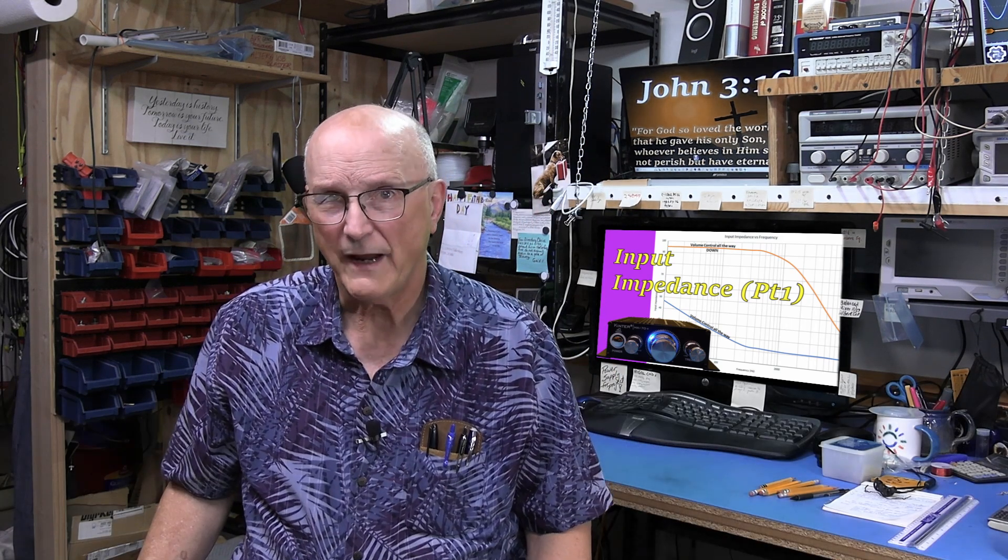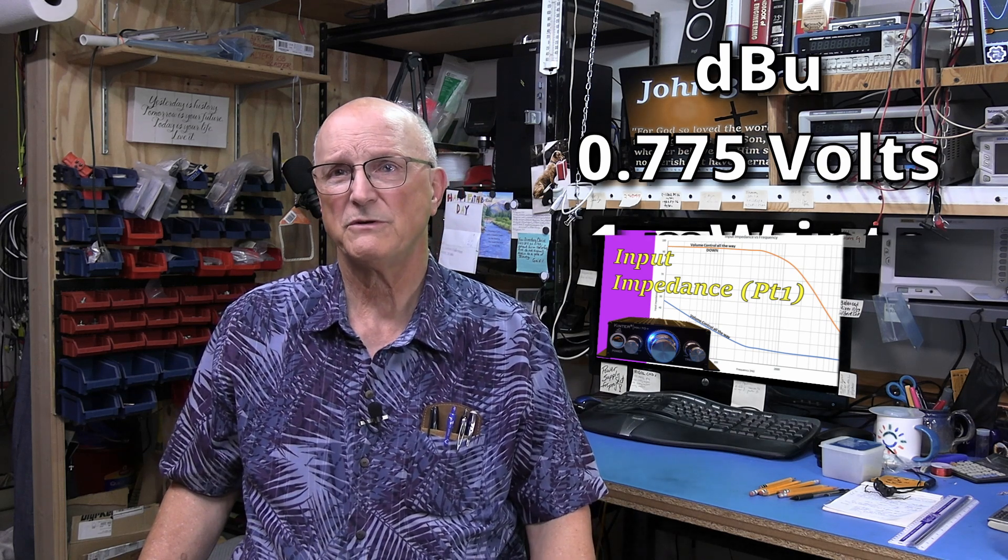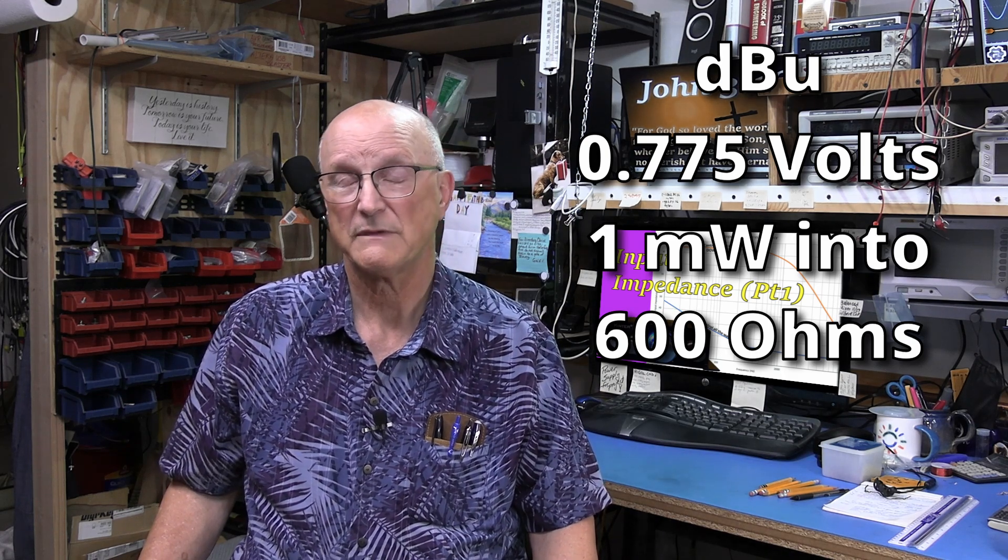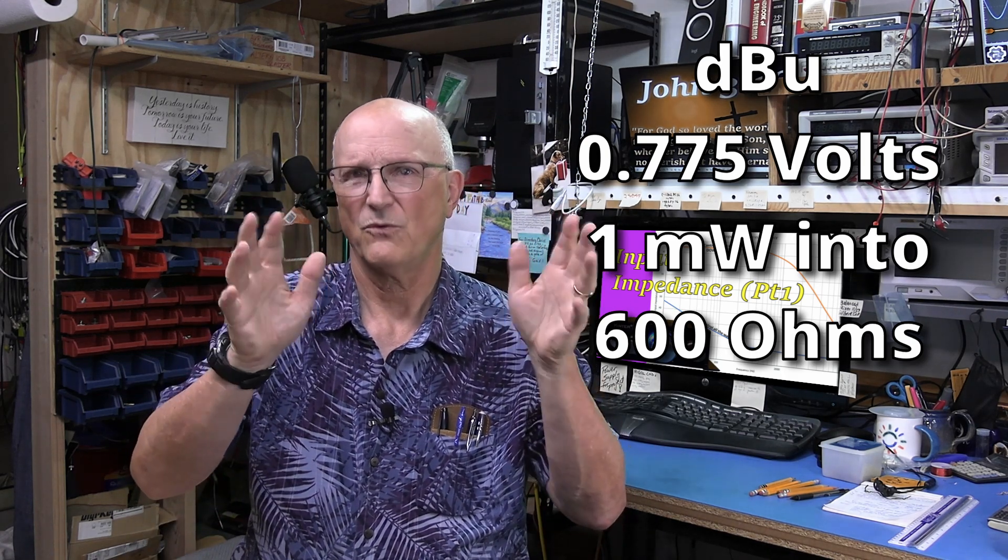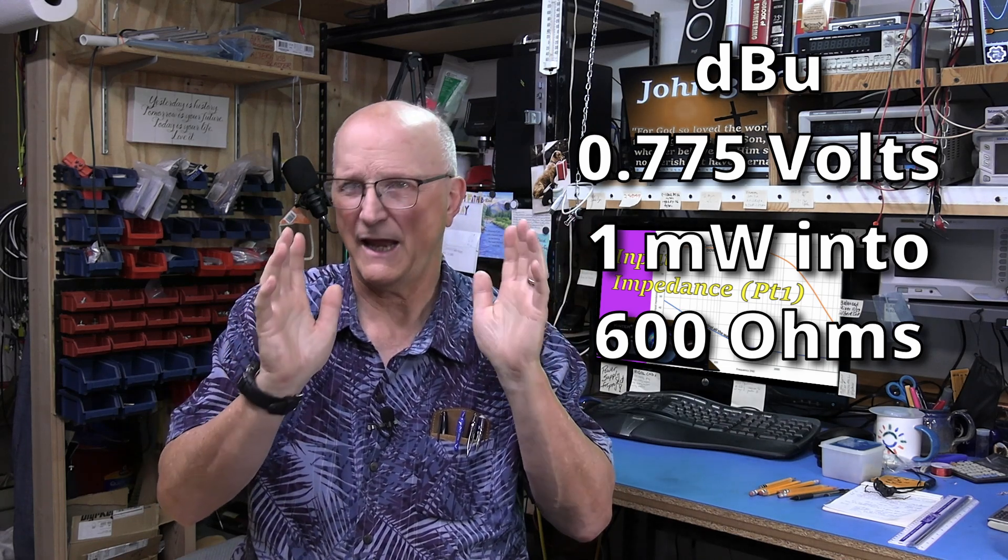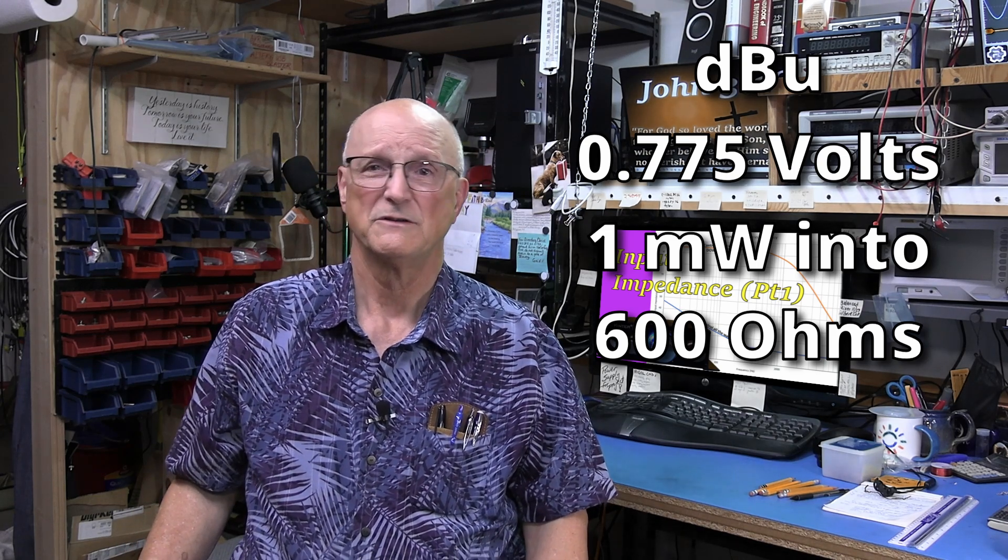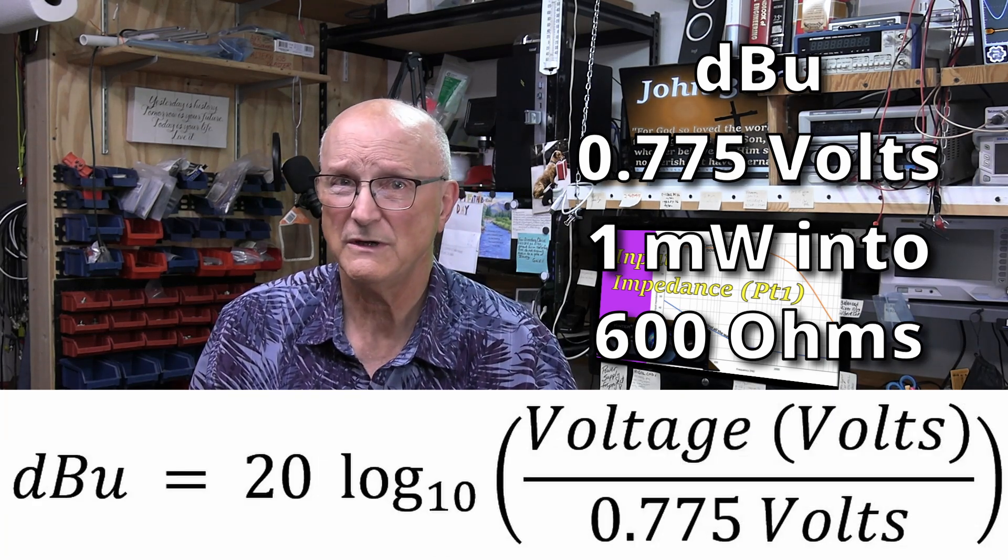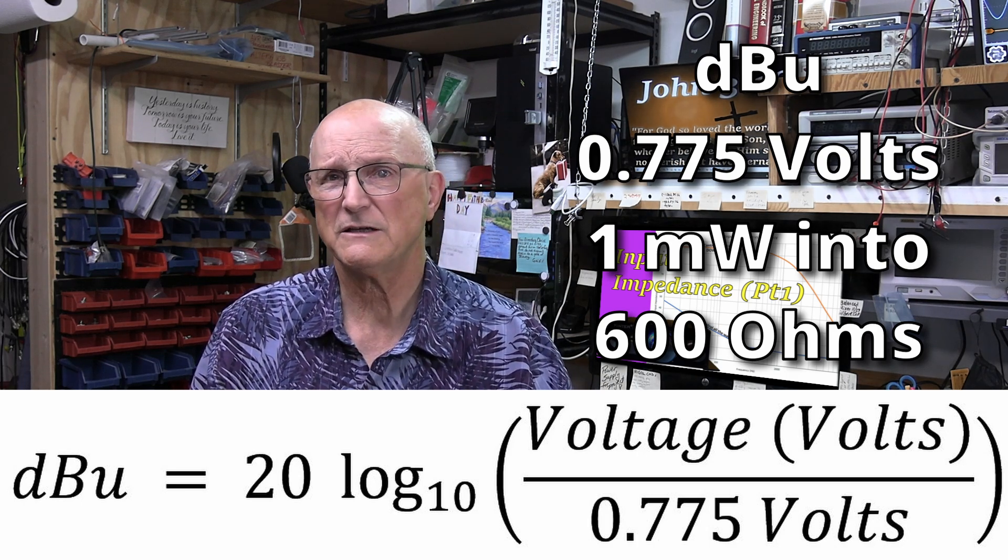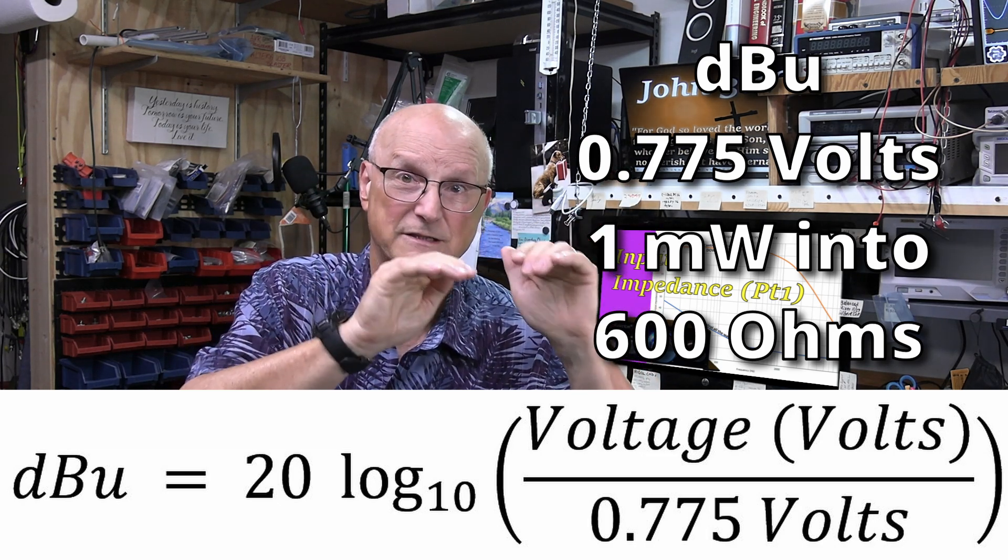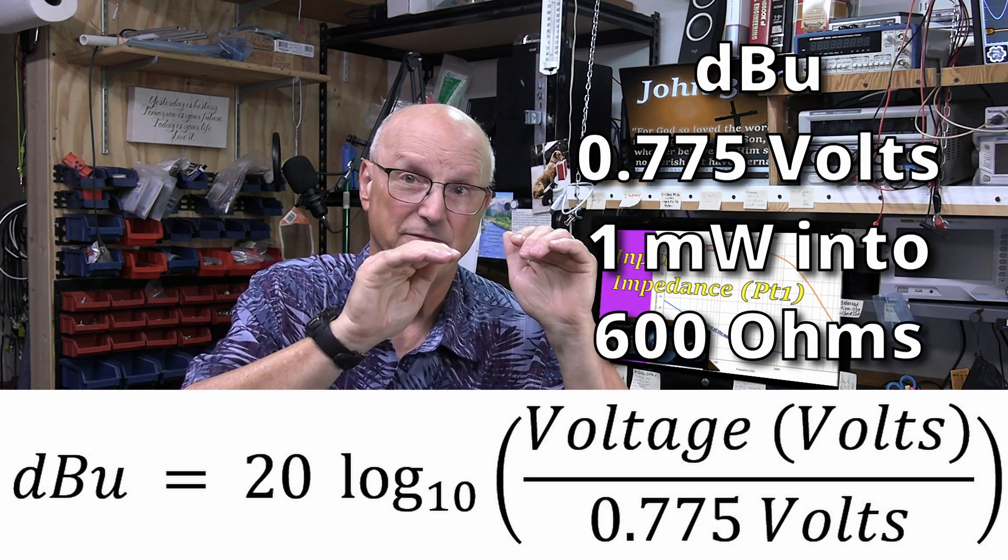On the other hand, the standard for dBU is 0.775 volts because it produces 1 milliwatt of power into a 600 ohm load. I know. Weird. But this dates back to ancient days and sticks around with us yet today. So dBU is equal to 20 times the log to the base 10 of the voltage in volts divided by 0.775 volts.